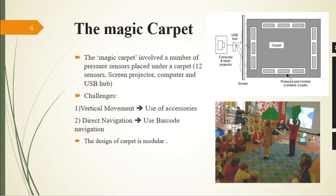Here we can see the structure of magic carpet, which involves a number of pressure sensors placed under the carpet. Children standing on the sensors at the front of the carpet would zoom in to the drawing. Standing on those at the back would zoom out, and standing on the sides would pan the viewpoint left and right.